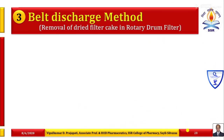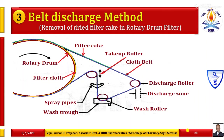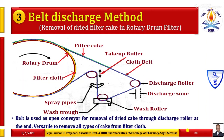The third method is the belt discharge method. Similar to string discharge, but instead of multiple strings, a fabricated belt of desired strength is used. The belt itself works as an open conveyor for removal of dried cake through the discharge roller at the end. It is versatile and can remove all types of cake from the filter cloth.